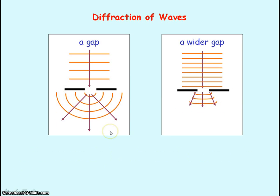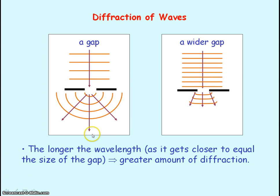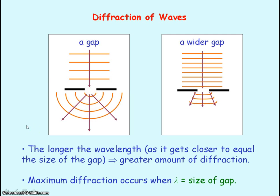These diagrams show that for the same size of gap, if the wavelength is too small you have less diffraction. The longer the wavelength — as it gets closer to equaling the size of the gap — the greater the amount of diffraction. You actually get maximum diffraction when the wavelength equals the size of the gap.